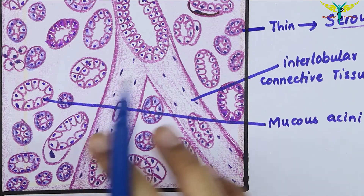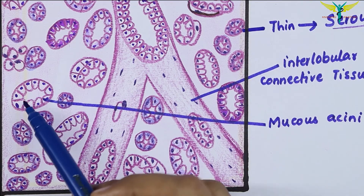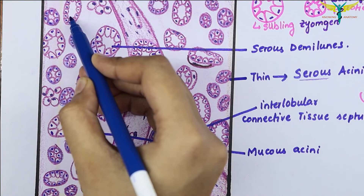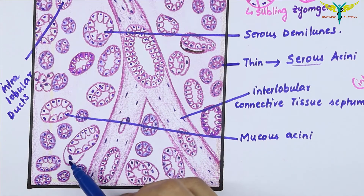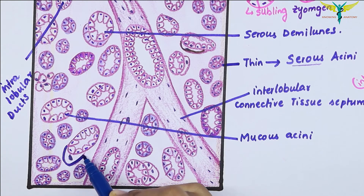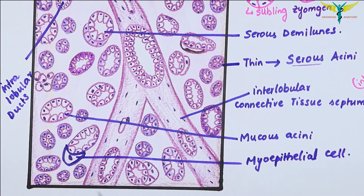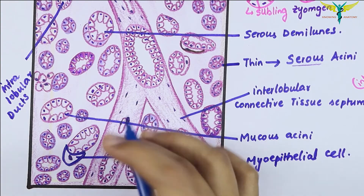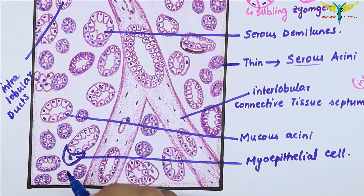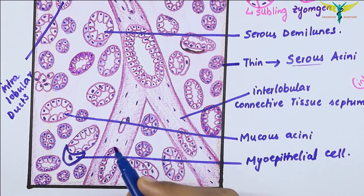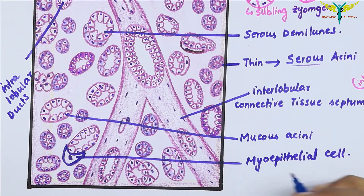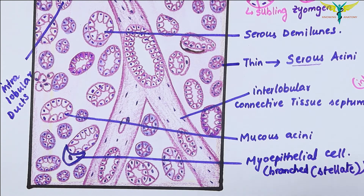The mucous acini are lightly stained and contain thick mucoid material inside. There is a presence of some intralobular ducts, and adipose tissue is present throughout. The myoepithelial cells are present in relation to the acini and to the intercalated ducts. These myoepithelial cells are located on the acini and are often branched, forming baskets around the acini — they can be branched or stellate.